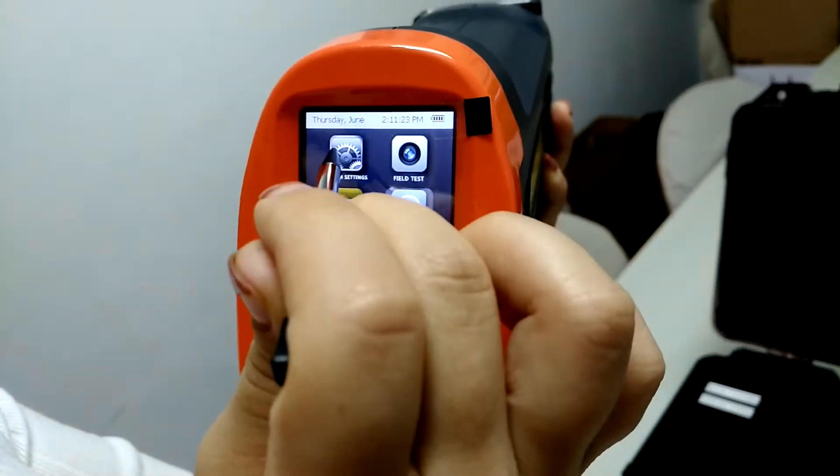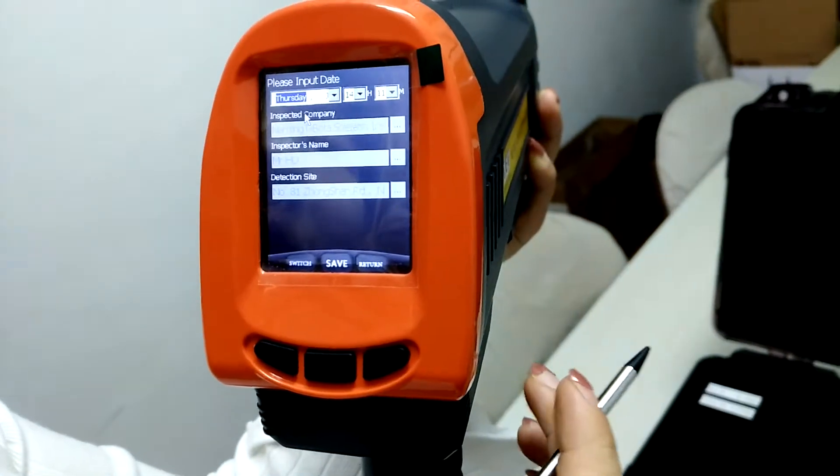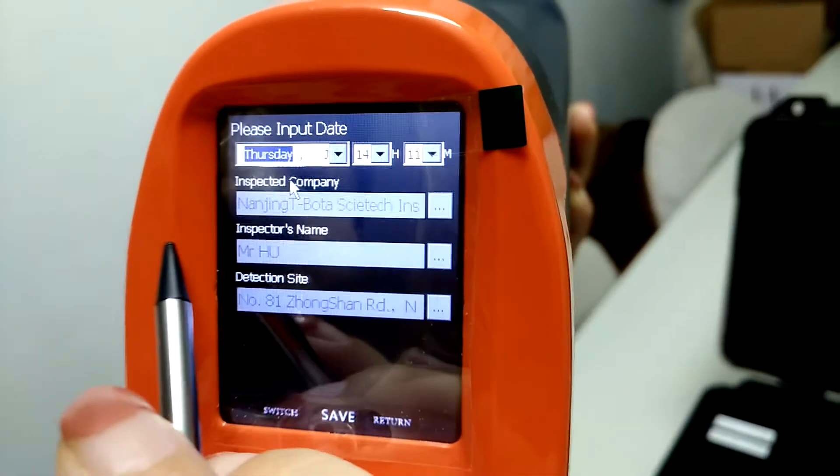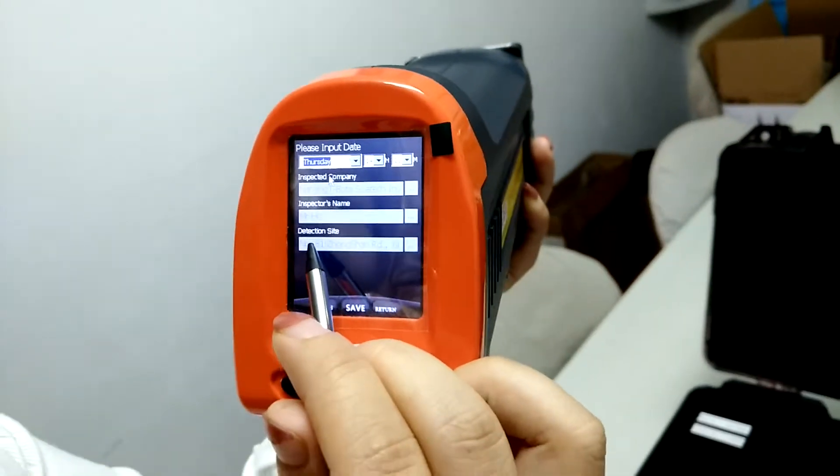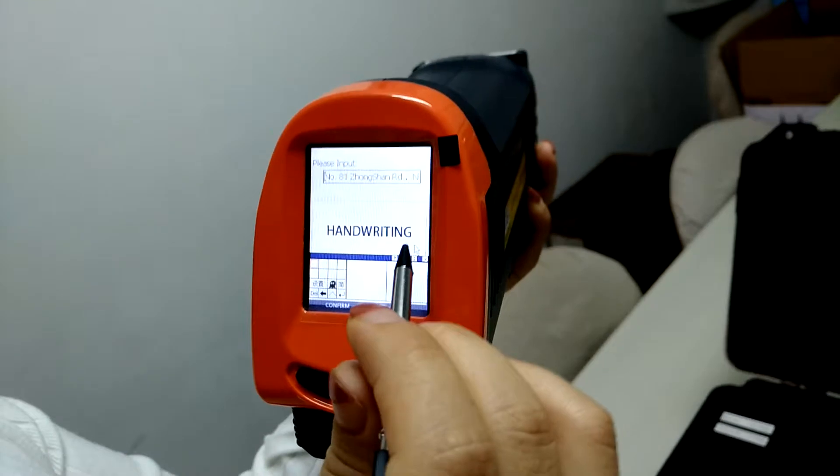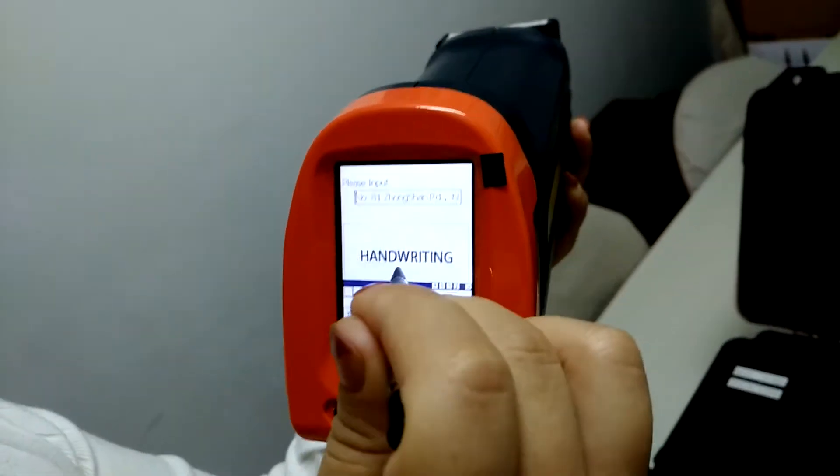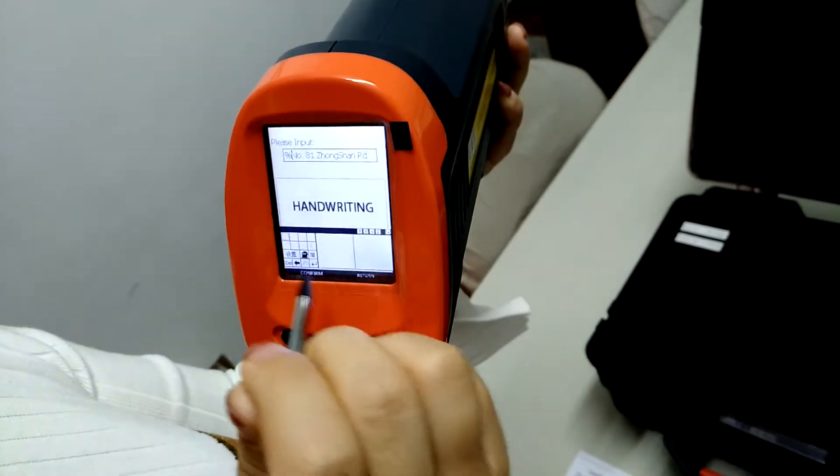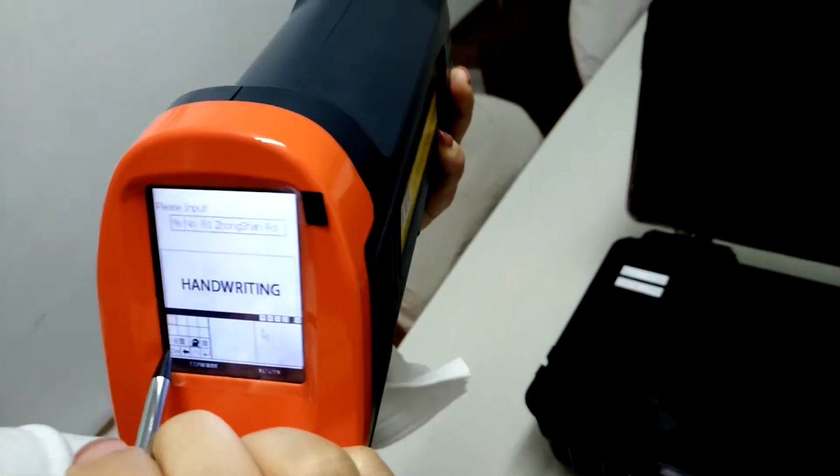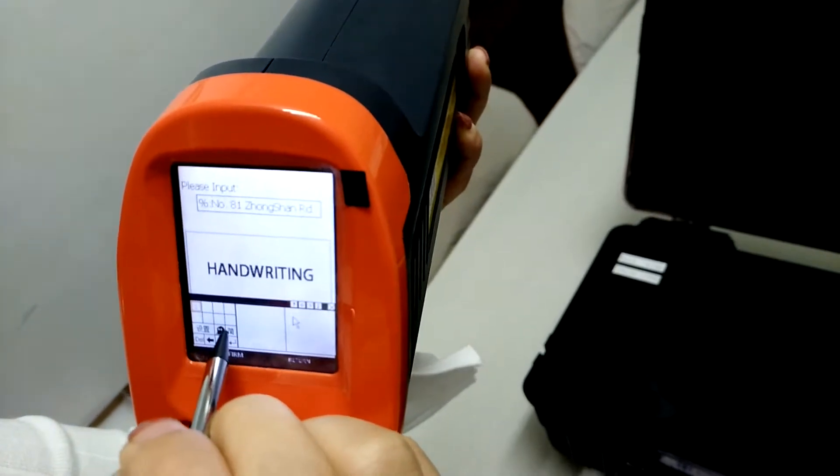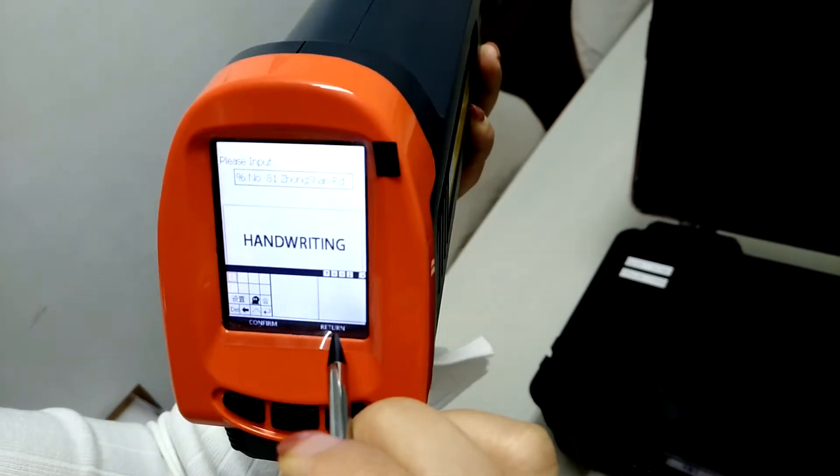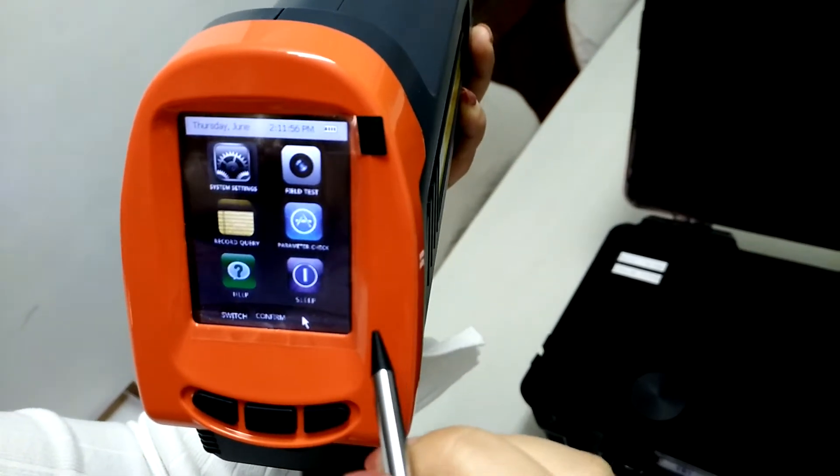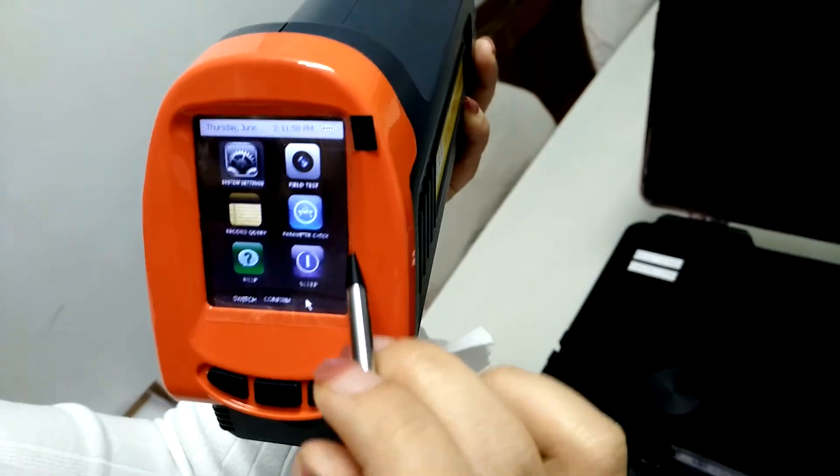This is the setting. For example, if you are in a different location, you can input the inspected company and the inspector's name and the detection site. You can just write in or you just use this keyboard. That's the main function of this part.